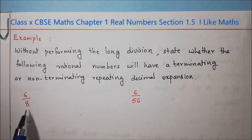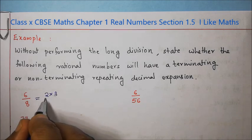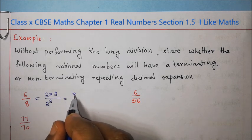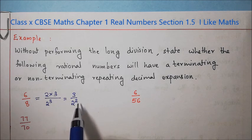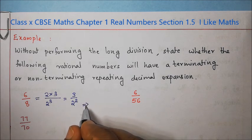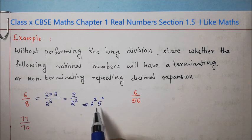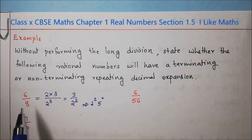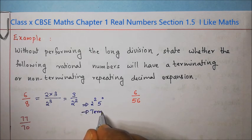Factorizing: 6 = 2 into 3, and 8 = 2 to the power 3. The common factor is 2. Cancelling, we get 3 by 2 to the power 2. The denominator 2 to the power 2 can be written as 2 to the power 2 into 5 to the power 0, which is in the form 2 to the power n into 5 to the power m where n and m are whole numbers. So this rational number will have a terminating decimal expansion.